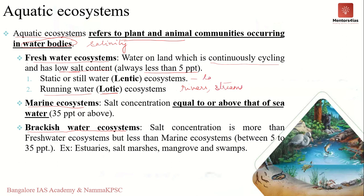The second type is marine ecosystems — water bodies with very high salt concentration, more than 35 parts per thousand, essentially your oceans and seas. The third type is brackish water ecosystems, with salt concentration between 5 to 35 parts per thousand — intermediate between freshwater and marine. Examples include estuaries, mangroves, and marshes.